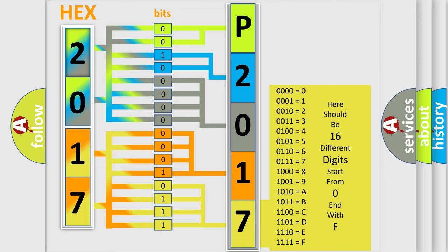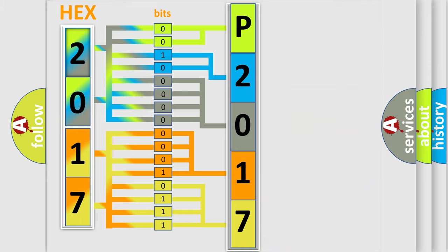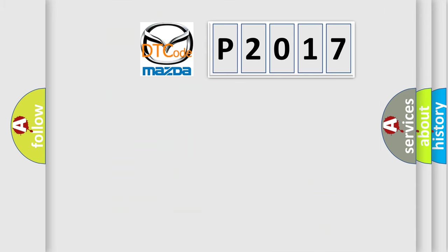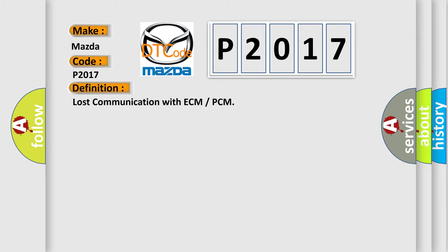We now know in what way the diagnostic tool translates the received information into a more comprehensible format. The number itself does not make sense to us if we cannot assign information about what it actually expresses. So, what does the diagnostic trouble code P2017 interpret specifically for Mazda car manufacturers? The basic definition is: Lost communication with ECM or PCM.